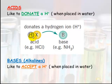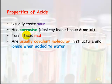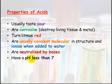HCl if it loses the hydrogen will become Cl negative, and it's gone from being a covalent molecule to ionizing. They are neutralized by bases. They have a pH of less than seven, and they're proton donors.